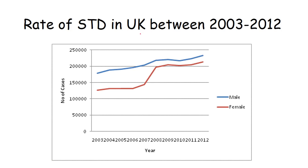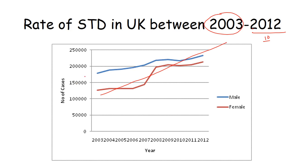Here you see a statistical diagram of the rate of STD in the UK between 2003 and 2012. In these 10 years, you will find the cases of STD rising — it's kind of linear. STDs were much more predominant in males earlier, but now male and female both have a parallel line of STD infections. The number of cases is over 2 lakh per year.